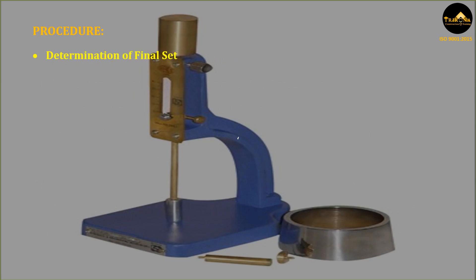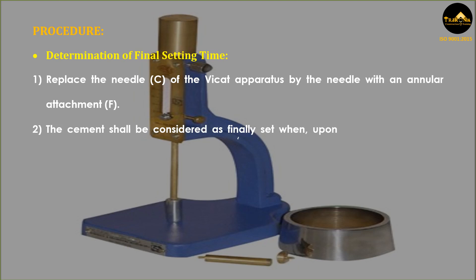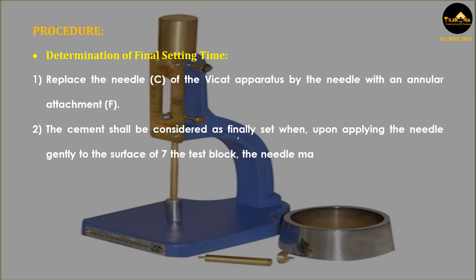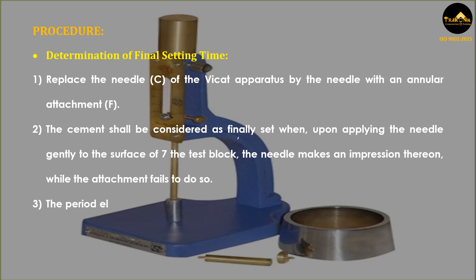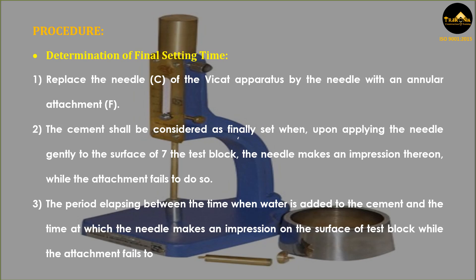Determination of final setting time: Replace the needle of the Vicat apparatus by the needle with an annular attachment F. The cement shall be considered as finally set when, upon applying the needle gently to the surface of the test block, the needle makes an impression thereon while the attachment fails to do so. The period elapsing between the time when water is added to the cement and the time at which the needle makes an impression on the surface of the test block while the attachment fails to do so shall be the final setting time.